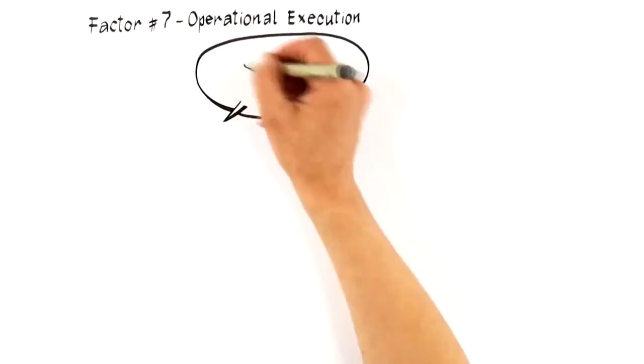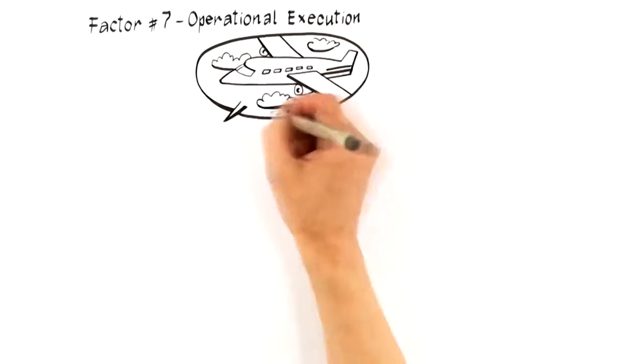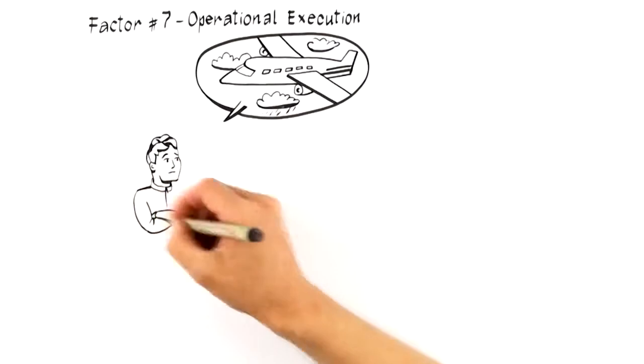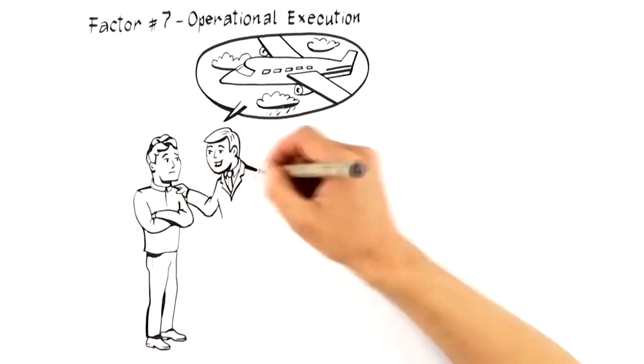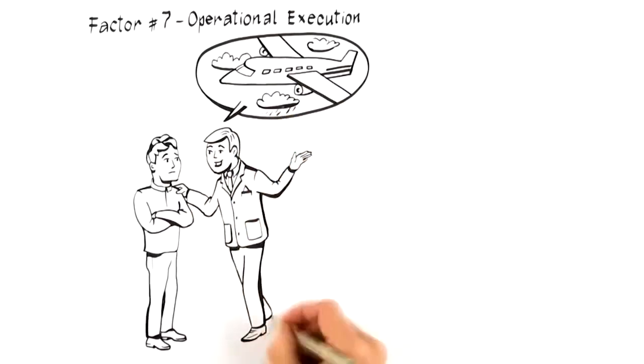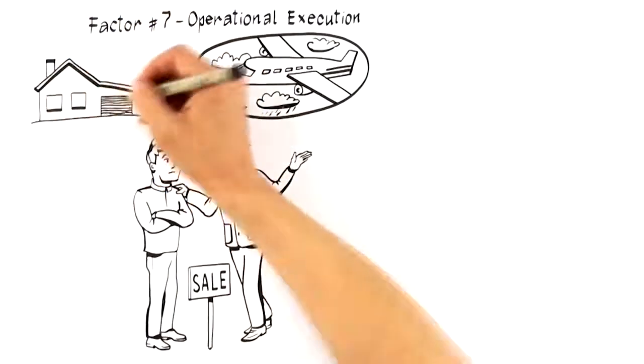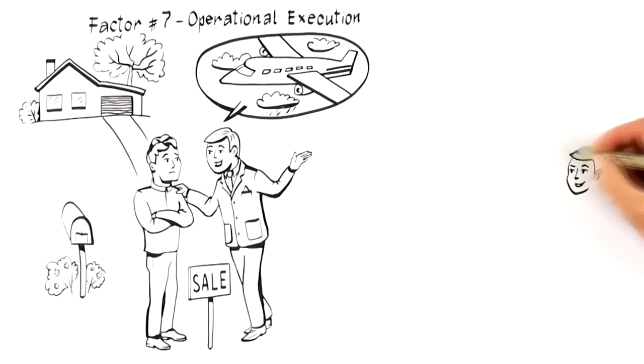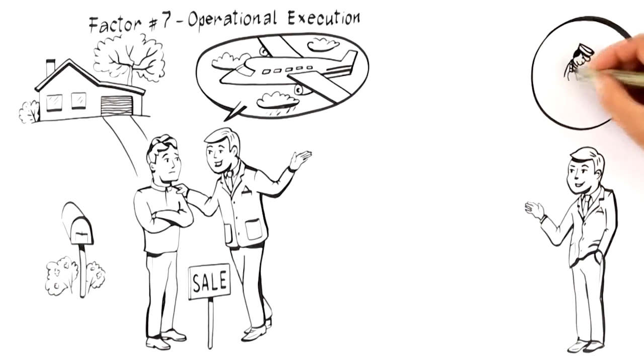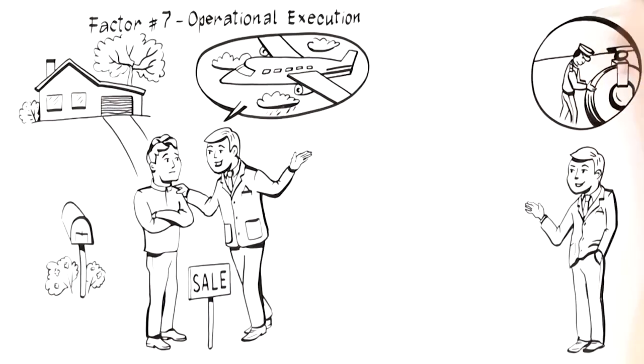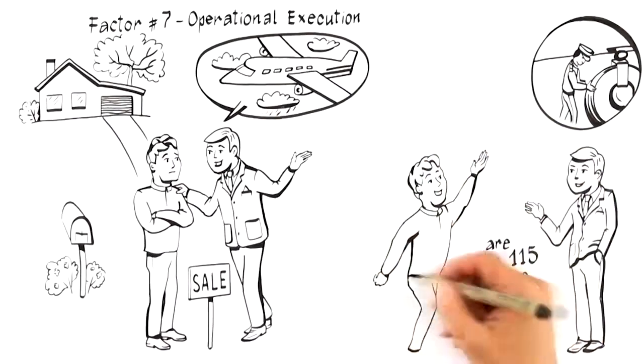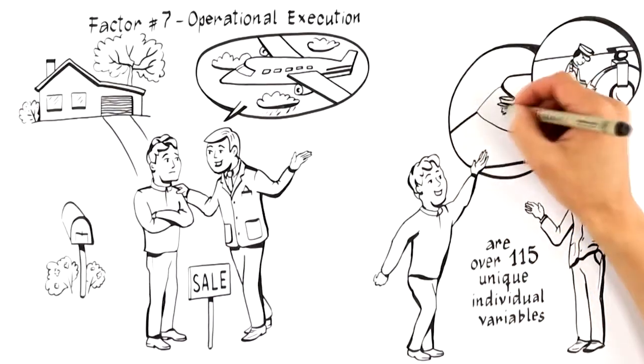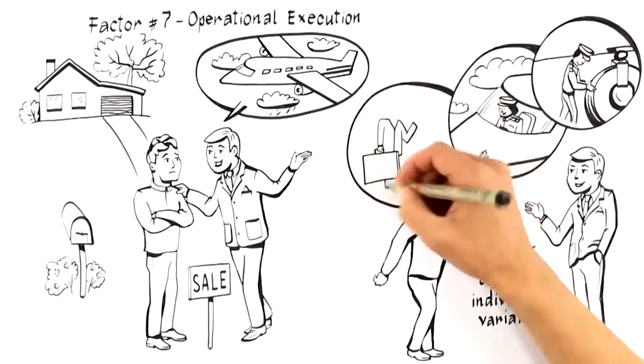The last factor that brings everything together is factor number seven, operational execution. The sale of your home is much like flying in an airplane. You want an expert in the cockpit who's flown hundreds of times and follows a set of documented processes to get your plane safely into the air and back on the ground again. You would never want your pilot to be the person who is checking the air in the tires, fueling the plane, washing the windows, or serving drinks up and down the aisle. And because there are over 115 unique individual variables that go into the successful sale of every home, you don't want an agent who doesn't have systems and relationships in place to manage the process. Like a safe flight, it takes many people working together to get your home sold for top dollar.